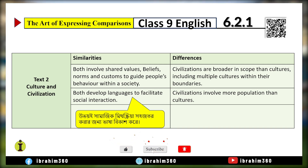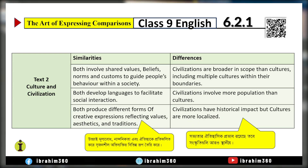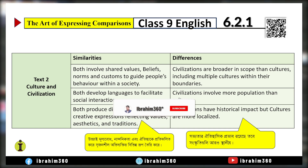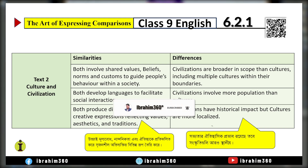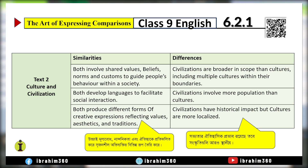Civilization involves more populous populations than culture — civilization involves thousands of humans, and culture is not the same. Both produce different forms of creative expressions reflecting values, aesthetics and traditions. Civilization has a historical impact and is more localized.